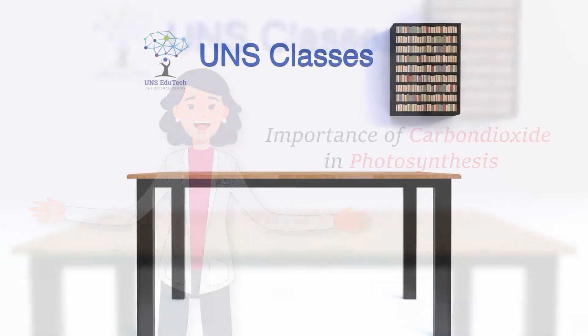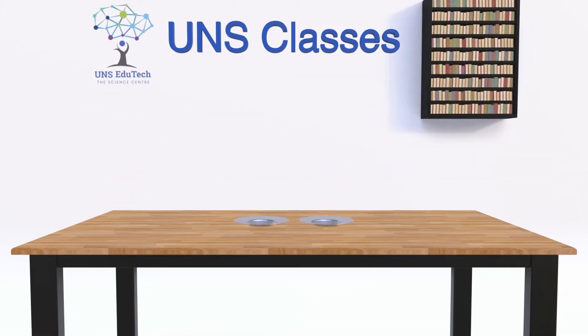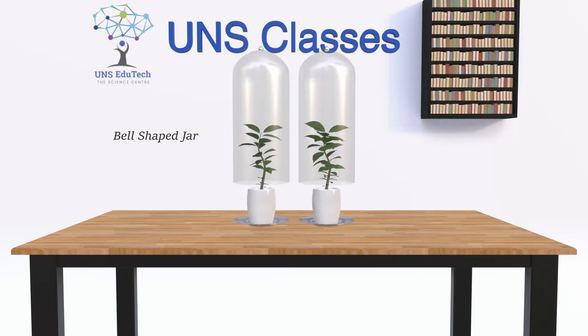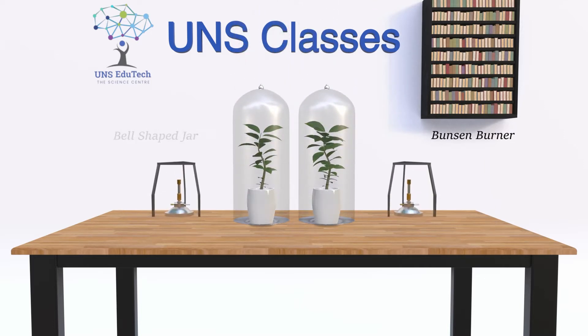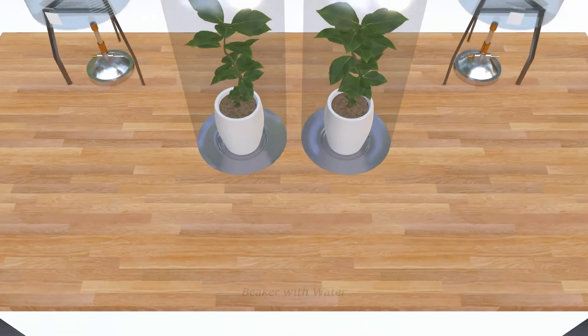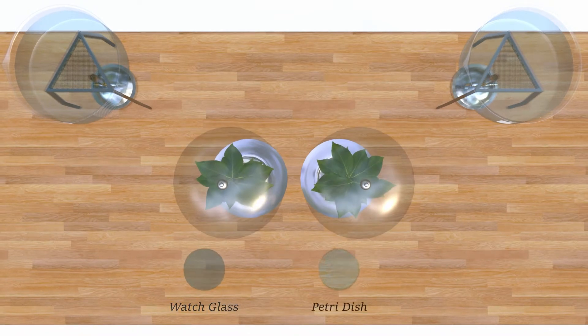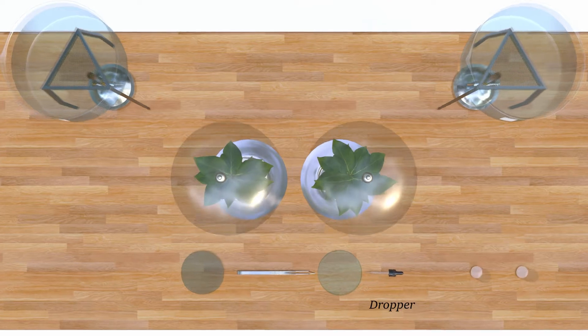For that we require two glass plates, two healthy potted plants of same size, two bell-shaped jars, Bunsen burner with stand, two wide open beakers with water, two watch glasses, four subs, ethyl alcohol, potassium hydroxide, iodine, and petroleum jelly.